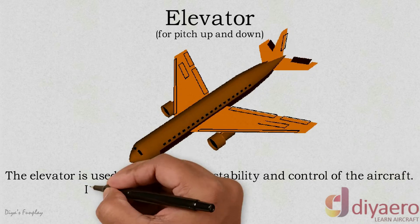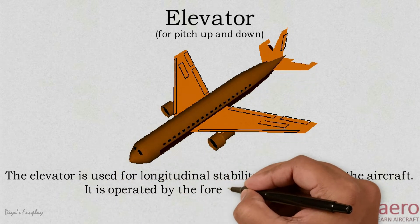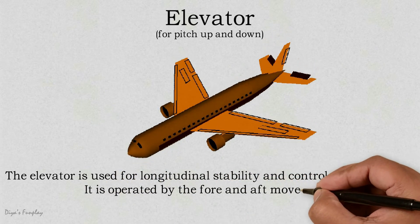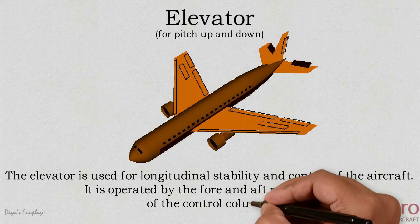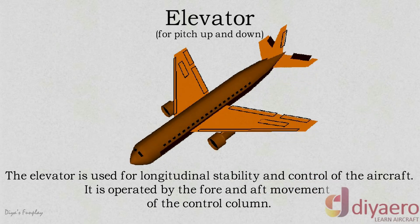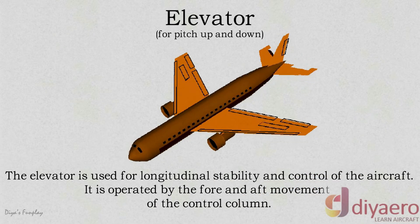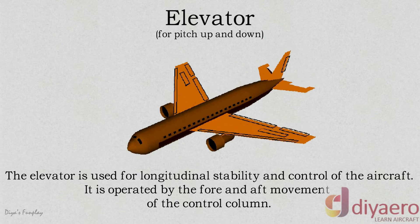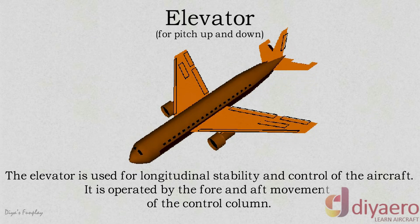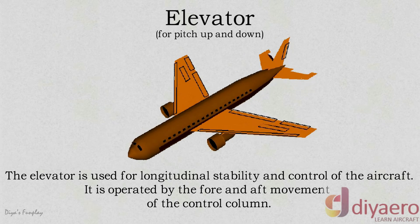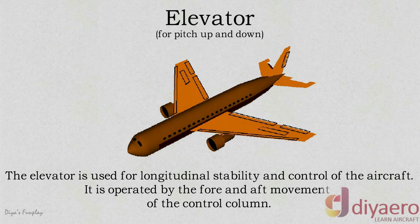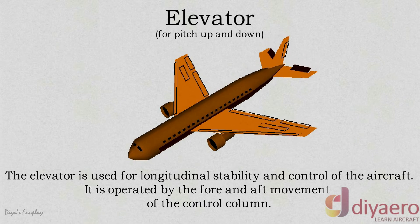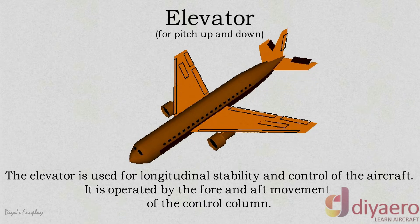The backward movement of the control column moves the elevator up, thereby pulling the nose of the aircraft up. When the elevator moves up or down, the overall shape of the airfoil in the tail plane changes, causing a difference in the aerodynamic force produced. This supplies a downward or upward aerodynamic force on the tail of the aircraft depending on the extent of the downward or upward deflection of the elevator.